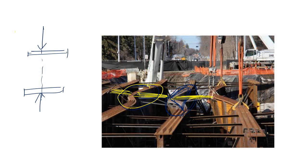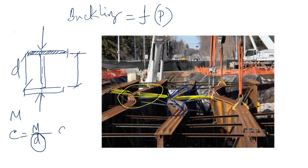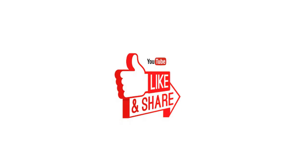Another solution is to increase the depth of the section. Since the compressive load in the top flange equals the bending moment divided by the section depth, increasing the depth reduces the compressive load and helps resist buckling. However, my suggestion is always to go for lateral support first, as that is the best approach. If you love this video, don't forget to share it.